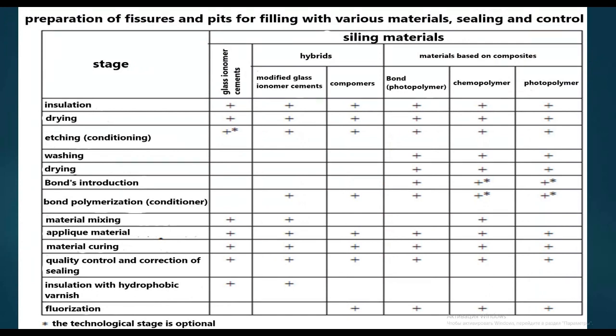Preparation of fissures and pits for filling with various materials, sealing and control. If using glass ionomer cement: insulation, drying, etching (optional), material mixing, application of material, material curing, quality control and correction of sealing, and insulation with hydrophobic varnish.